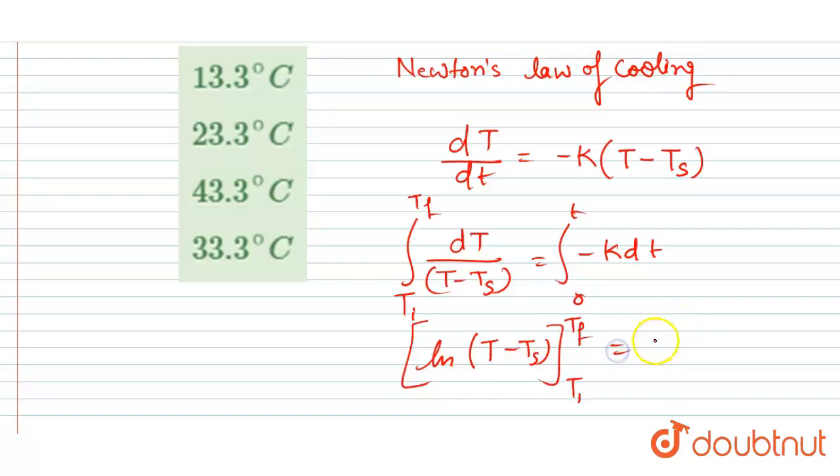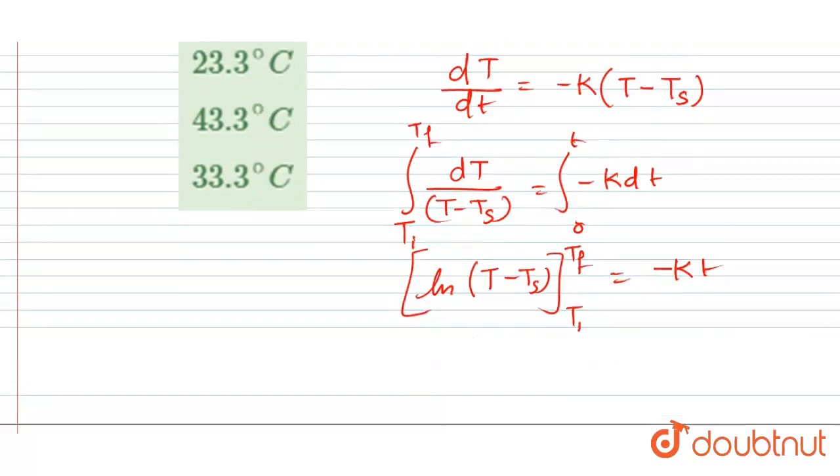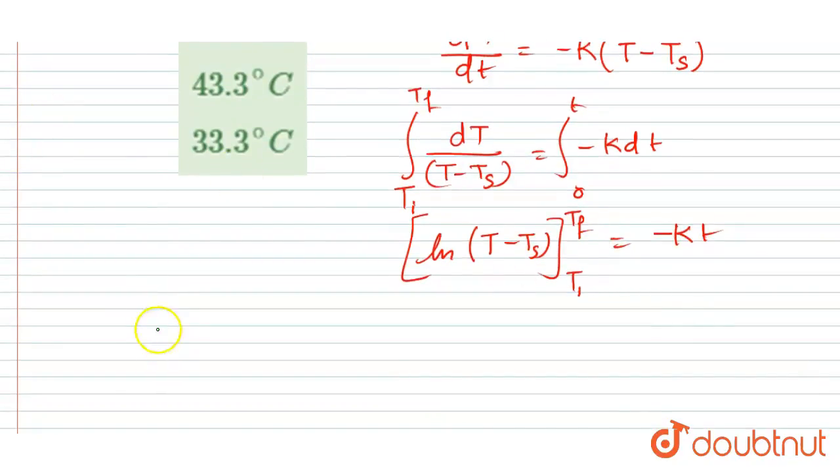to T final. That will equal minus Kt, right? So you will get the expression ln(T final minus surrounding temperature) minus (T initial minus surrounding temperature) equals this.